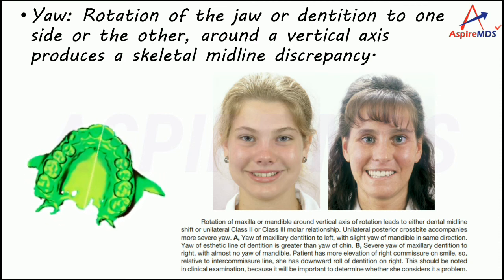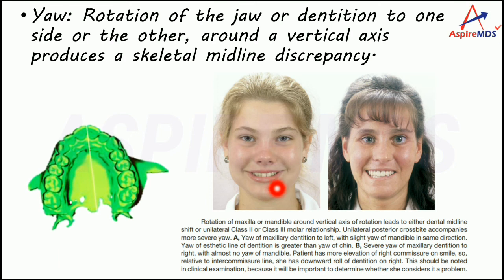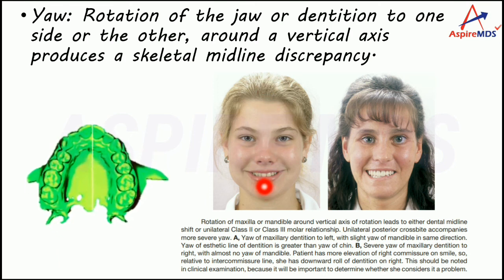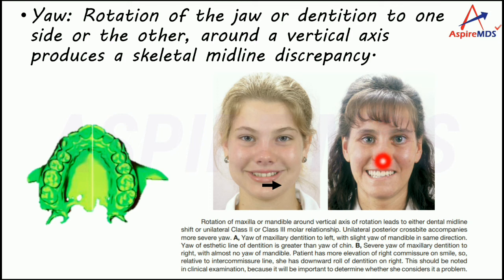In the first example, the dentition midline is shifted towards the patient's left side, and there is also some yaw of the mandible. In the second example, the maxillary dentition midline is shifted towards the patient's right side. This kind of rotation is known as yaw.